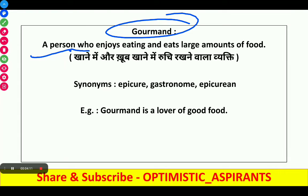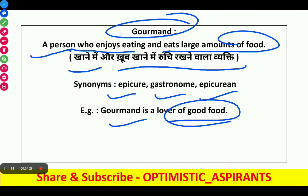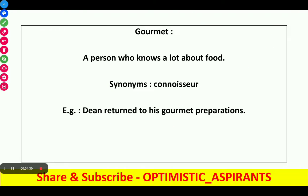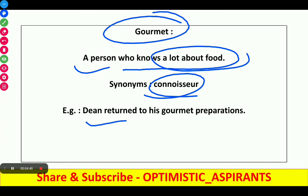Next word is gourmand. It is a person who enjoys eating and eats large amounts of food. In Hindi it is 'khane mein khoob ruchi rakhne waala'. Synonyms are epicure, gastronome, and epicurean. Example: 'A gourmand is a lover of good food.' Next word is gourmet. It is a person who knows a lot about fine food. Synonyms are connoisseur. Example: 'He is deemed worthy of his gourmet preparations.'